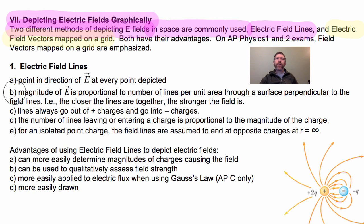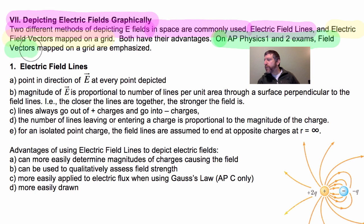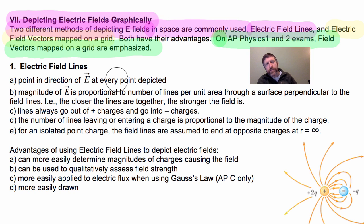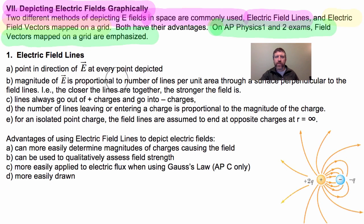Both of these have their advantages. One important thing to be aware of if you are taking AP Physics 1 or 2: on those exams, only the field vectors mapped on a grid are used. They won't ask you to draw field lines, but they may ask you to draw a vector field. Let's talk about both methods and their advantages and disadvantages.